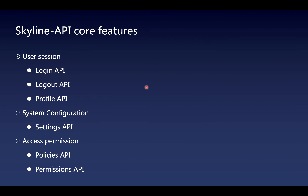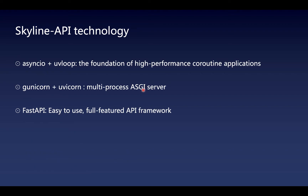After talking about Skyline UI, let's take a look at Skyline API. It has three core features. The user session part contains login API, logout API, and profile API. System configuration contains the settings API, and the access permission part contains policies API and permissions API. For the involved technologies, AioHTTP and UvLoop are the foundation of high-performance coroutine applications. Gunicorn and UVicorn are multi-processed ASGI servers. FastAPI is used to build an easy-to-use, full-featured API framework.